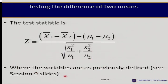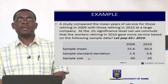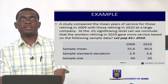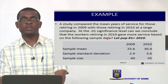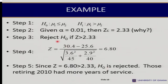The definitions were previously discussed in Section 9 slides. For the example: a study compared mean years of service for those retiring in 2009 versus 2010 at a large company. At the 1% significance level, can we conclude that workers retiring in 2010 gave more service? The sample means are 25.6 and 30.4 years, standard deviations are 2.9 and 3.6, and sample sizes are 40 and 45 respectively.